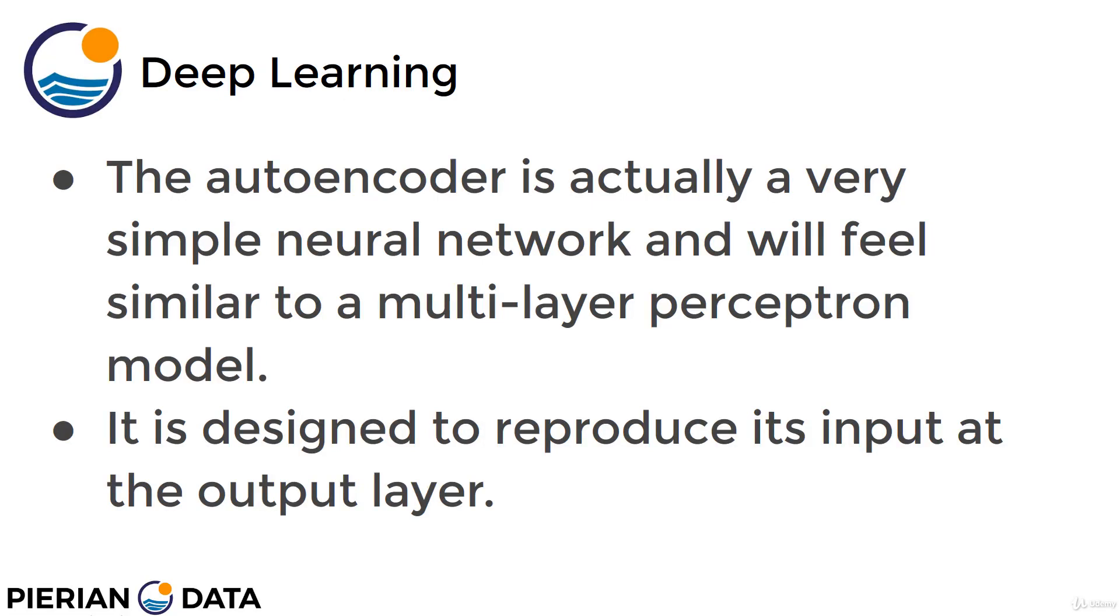The autoencoder is actually a very simple neural network and will feel very similar to the multilayer perceptron models that we built during the artificial neural network section of the course. The main idea is that an autoencoder is designed to simply reproduce its input at the output layer.